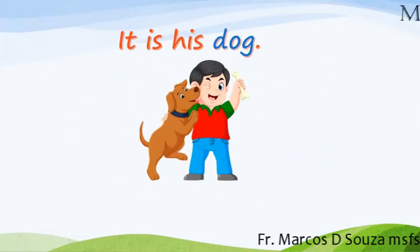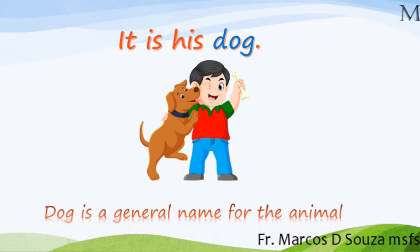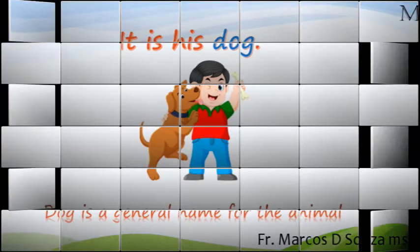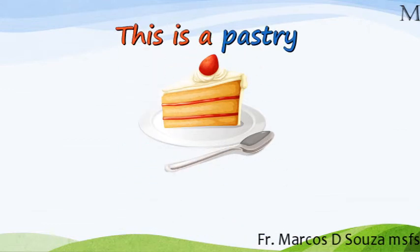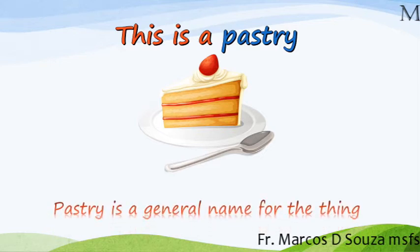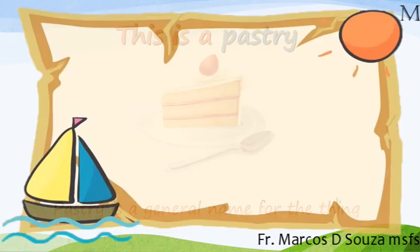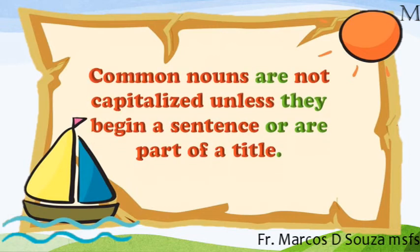It is his dog. In this sentence, we are talking about a dog. Dog is a general name for the animal. This is a pastry. In this sentence, we are talking about a pastry. Pastry is a general name for the thing. Common nouns are not capitalized unless they begin a sentence or are part of a title.